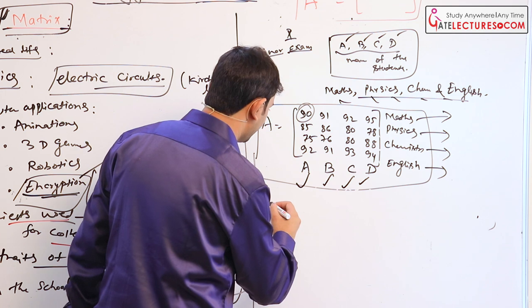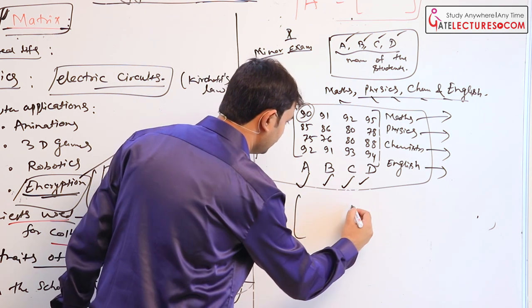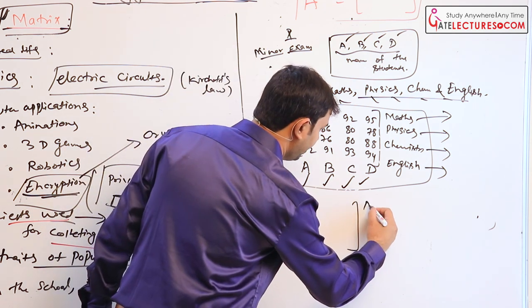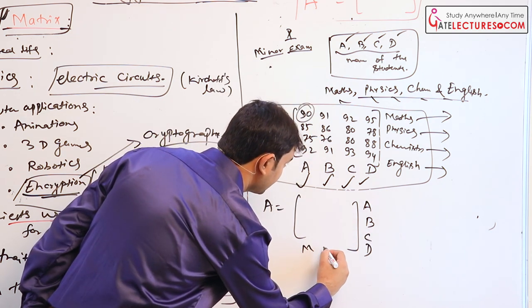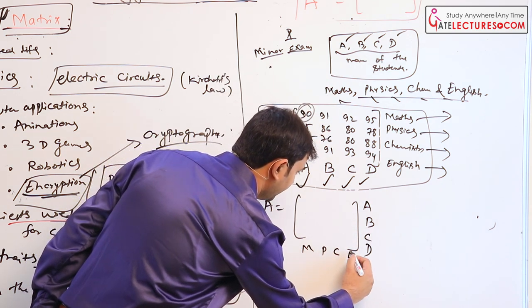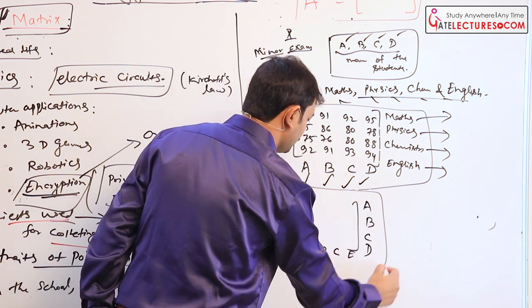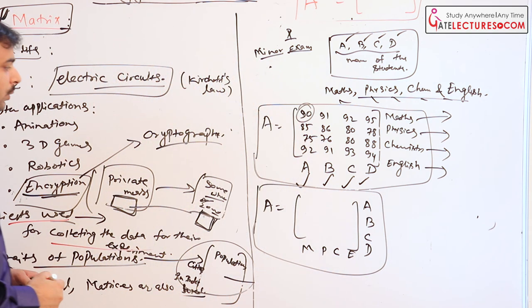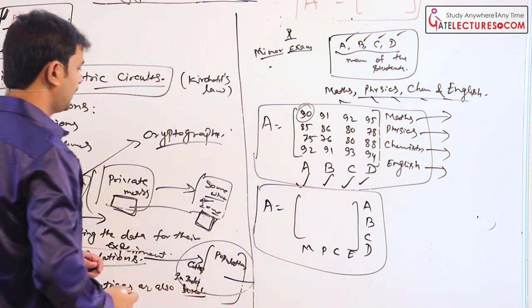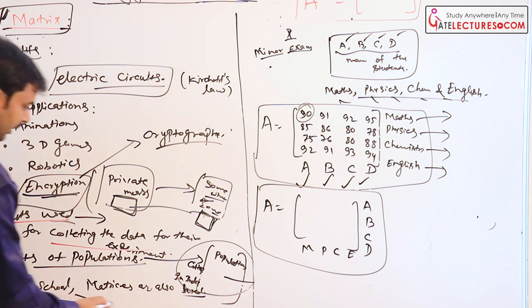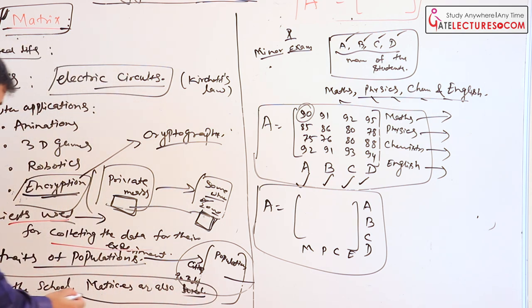It can also be written in that form. You can write A, B, C, D in the rows and maths, physics, chemistry, English in the columns. So it depends upon what you want to do and matrices are also particularly used in all the schools for the collection of data.